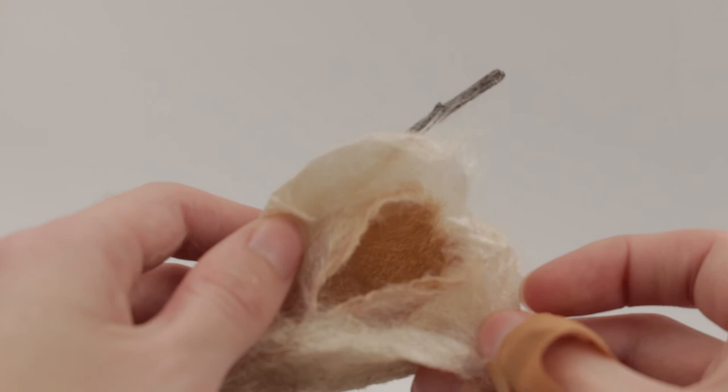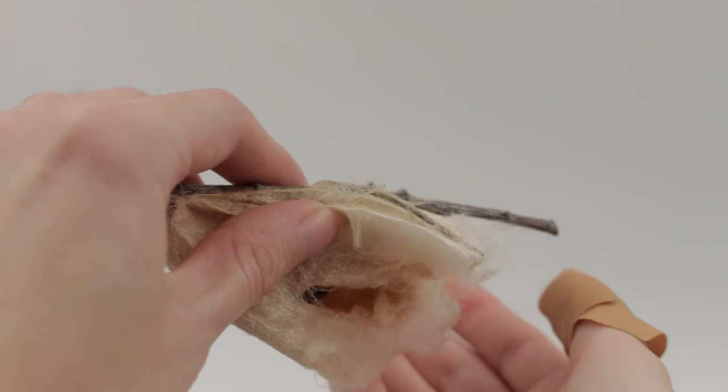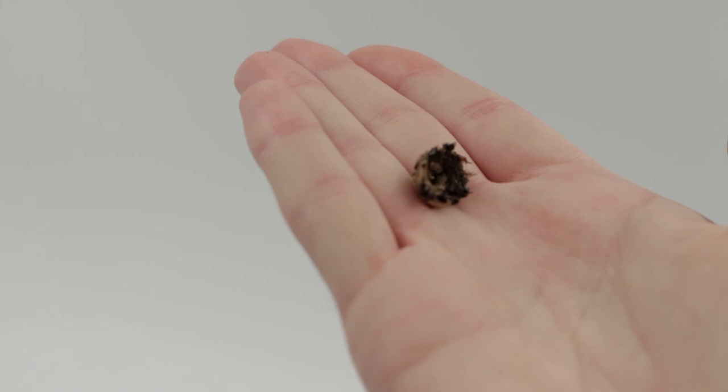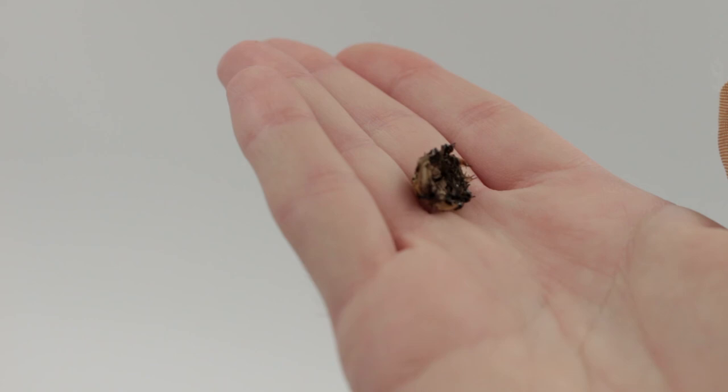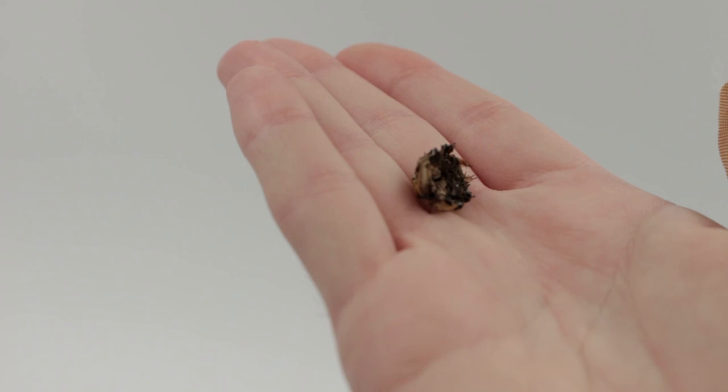Optionally, before putting the moth back in the cocoon, you'll notice that there's a little something in the bottom of the cocoon here. And this is basically the old shed skin of the caterpillar when the caterpillar turned into a pupa. You can remove this. You don't have to, but normally when I open up my cocoons, I just like to dump it out just so that the cocoon is empty and clean for putting the pupa back inside.